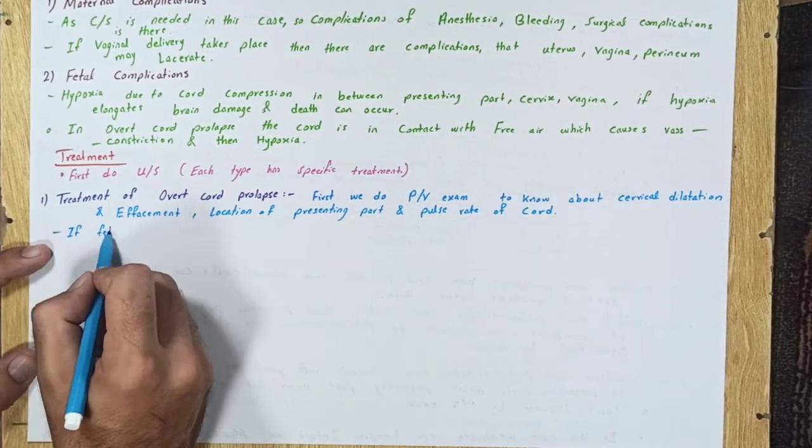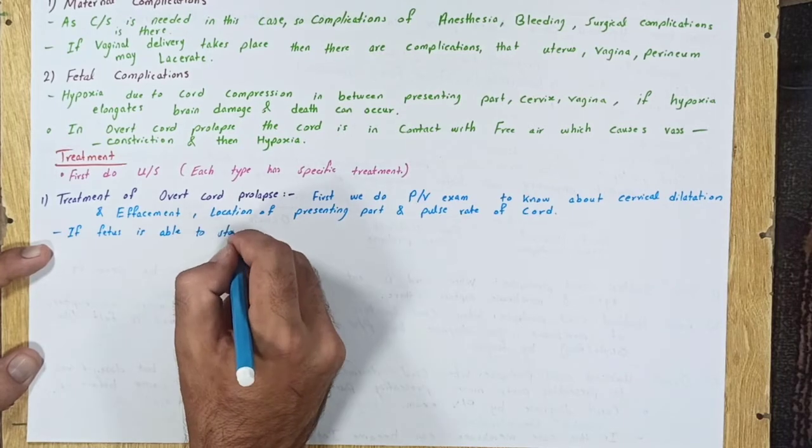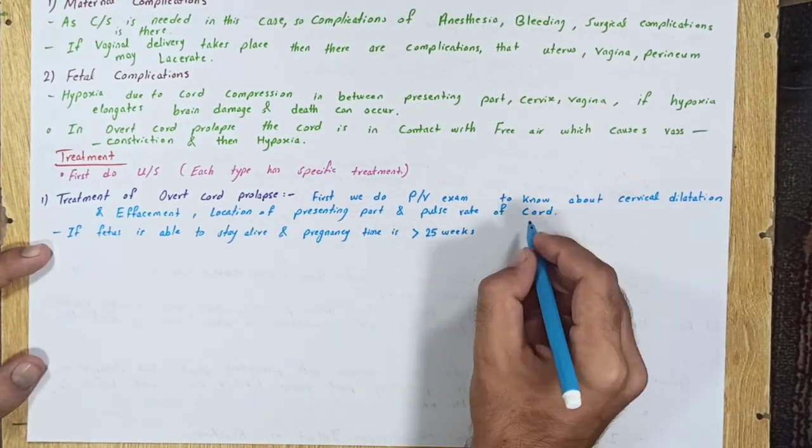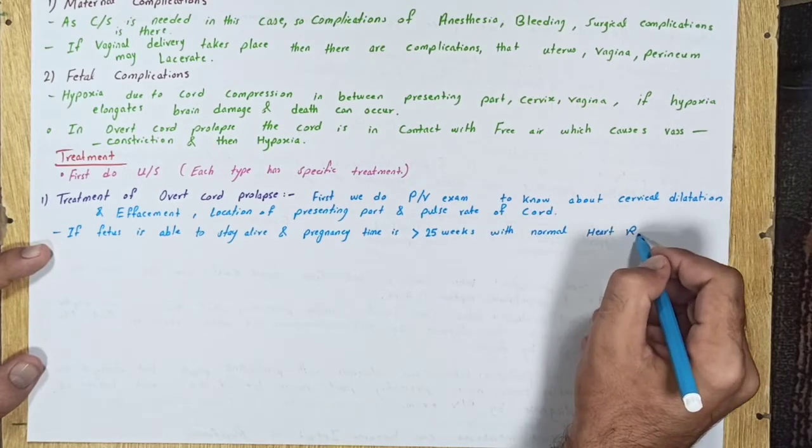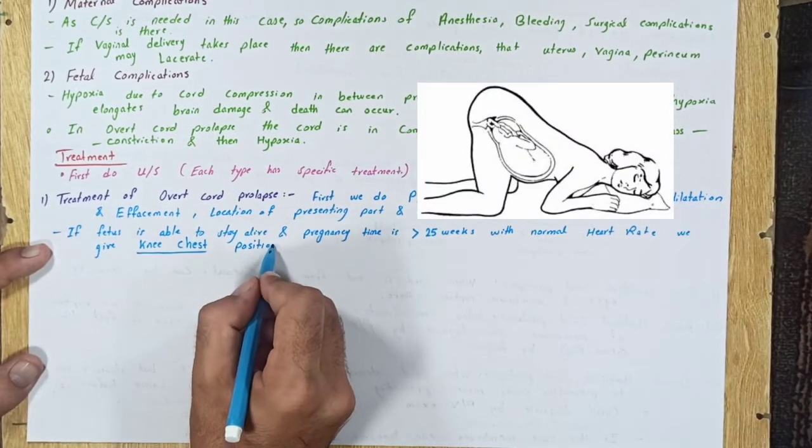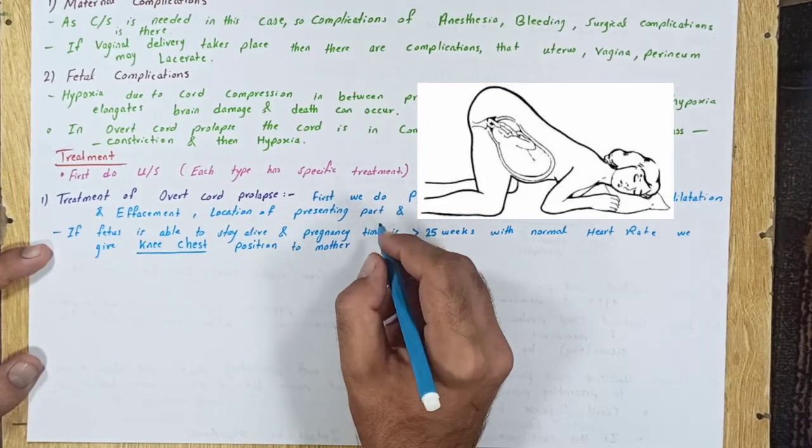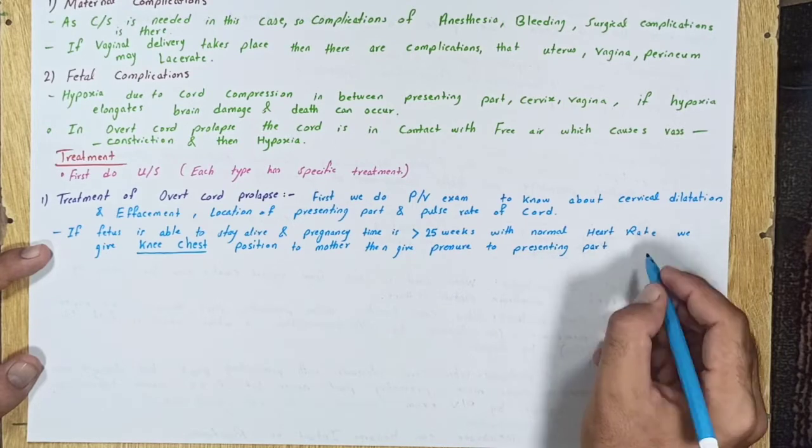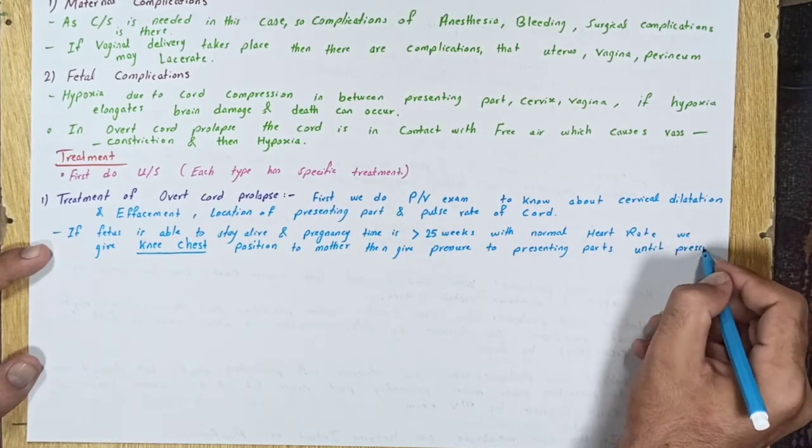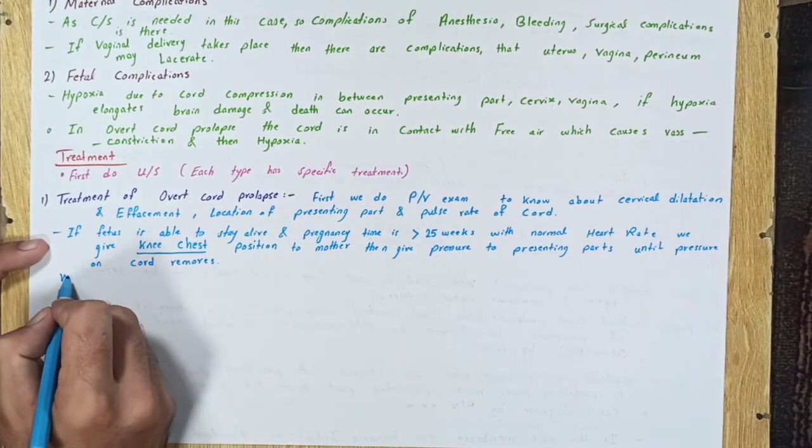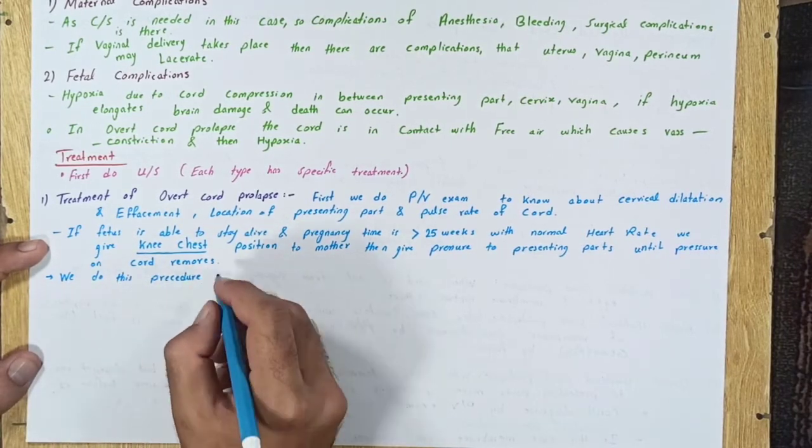If fetus is able to stay alive and pregnancy time is greater than 24 weeks with normal heart rate, we give knee-chest position to mother, then give pressure to presenting parts until pressure on cord removes. We do this procedure until mother is ready for cesarean section.